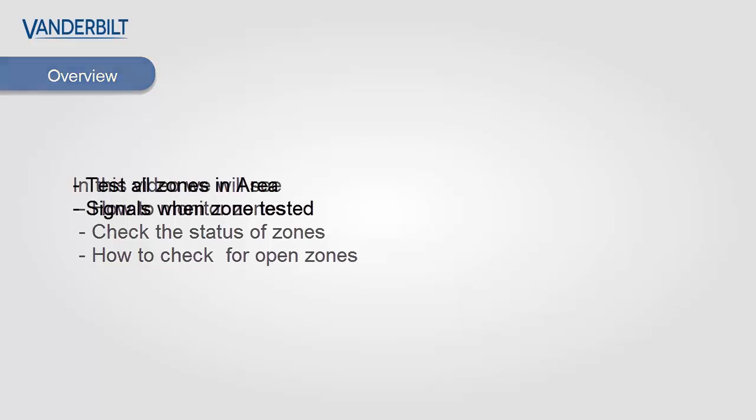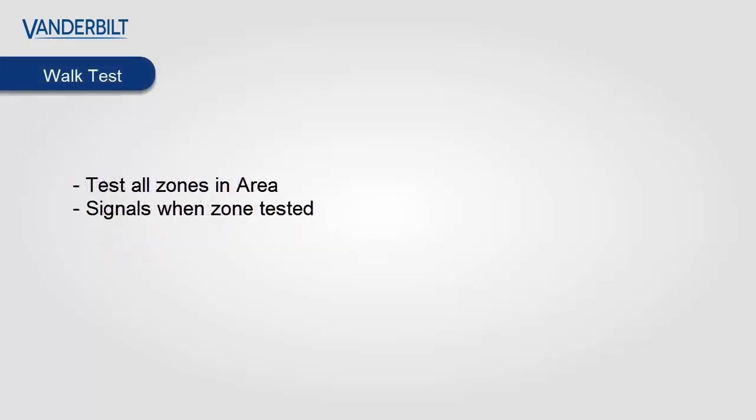First let's look at how to perform a walk test on the SPC system. Walk test allows you to test that each zone is working operationally. As each zone operates it will reduce the walk test count. When all zones are tested it will say walk test complete. In order to access, we log into the keypad and can access this through the user, soft engineer or full engineer menu.